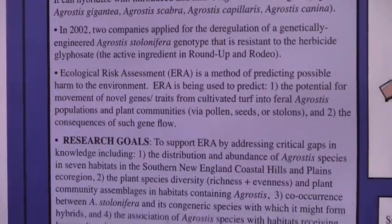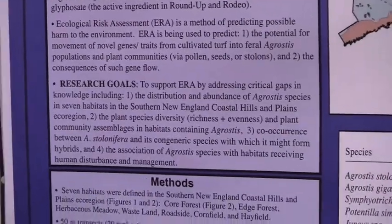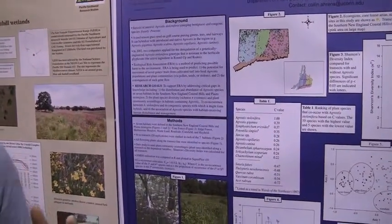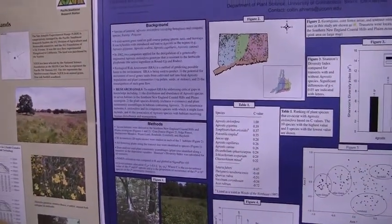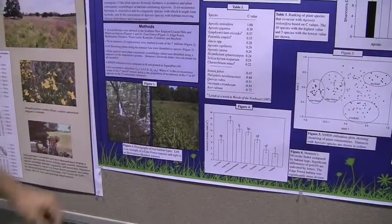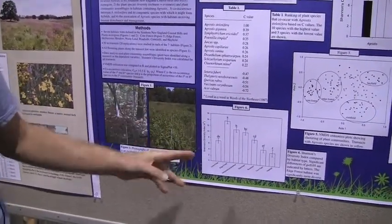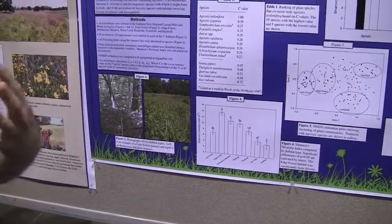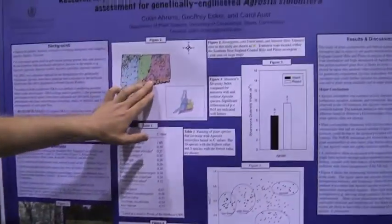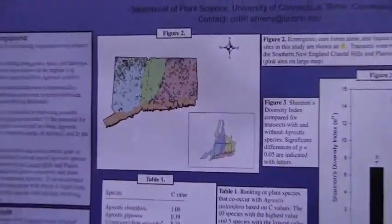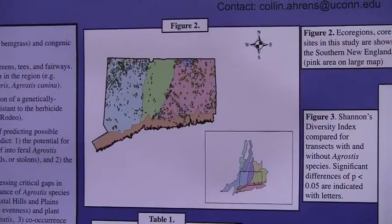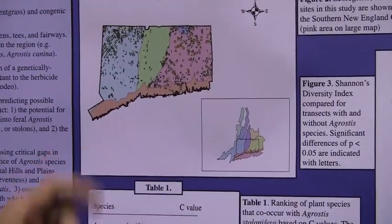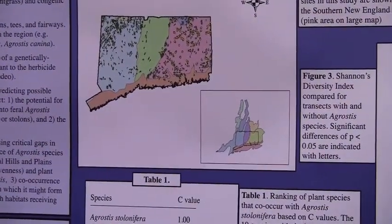What we want to do is look at communities and the population ecology of these Agrostis species. We went to seven different habitats: the first is a core forest habitat, and we also went to herbaceous meadows. We went to 20 different clusters across Connecticut, and within these clusters we sampled seven different habitats for a total of 130 transects across the southern New England coastal hills and plains ecoregion.